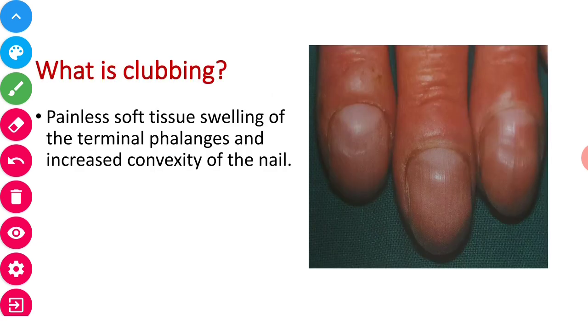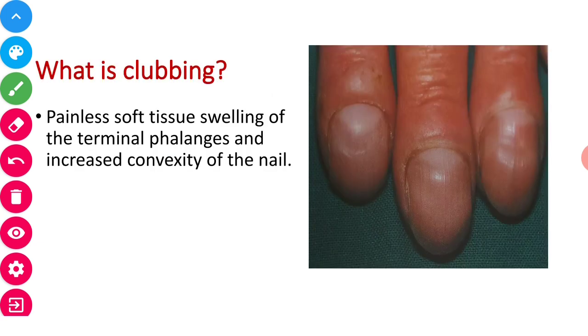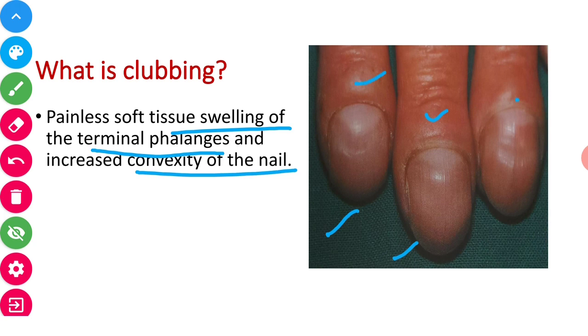So let's start. First, what is clubbing? Basically it's a swelling of the terminal phalanx that increases the convexity of the nail. Here you can see the nail convexity increases and there is swelling of the terminal phalanx.